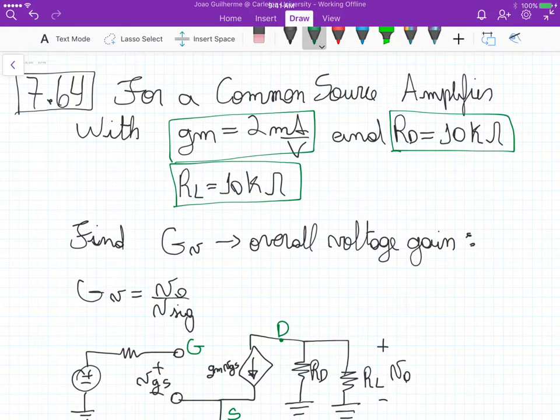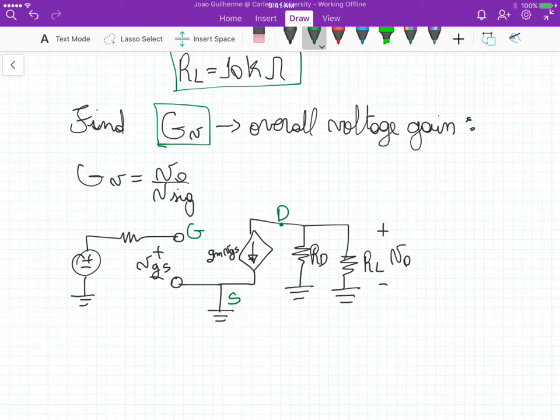so find the overall voltage gain, GV here, and GV here we know that is the relationship between the output voltage and the signal voltage. And for this particular problem, basically what we are interested is what's the relationship between, so what's the overall voltage gain, that's the relationship between this output voltage here with the input.